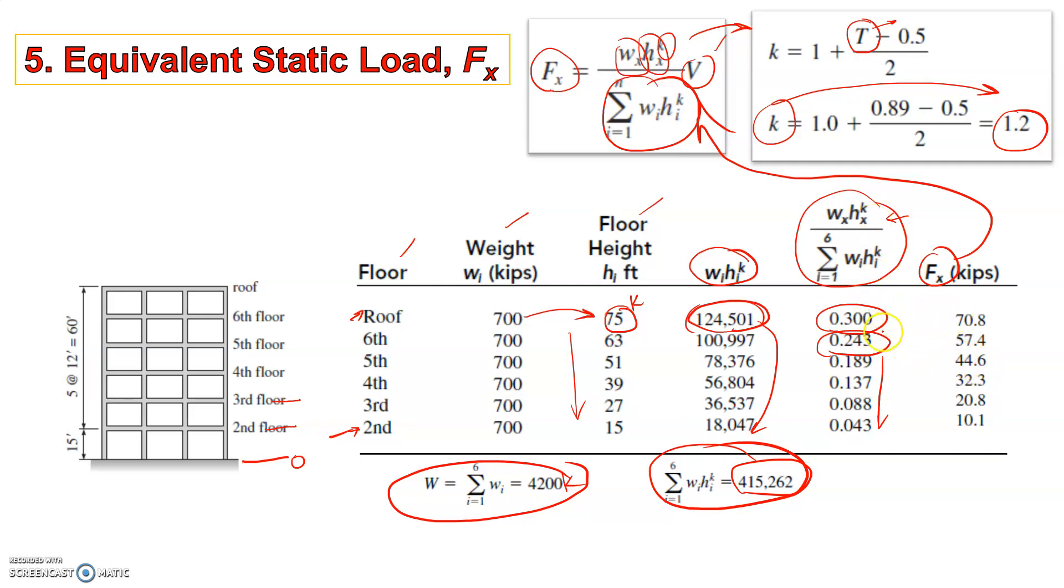When we multiply this particular value with V, we get the value of Fx for the top floor, for the roof, then this is for the sixth floor, this is for the fifth floor and so on. So this means, and we see that when you take the sum, we get back the value of V. Essentially, we are just distributing the base shear onto each floor in a formalized way.